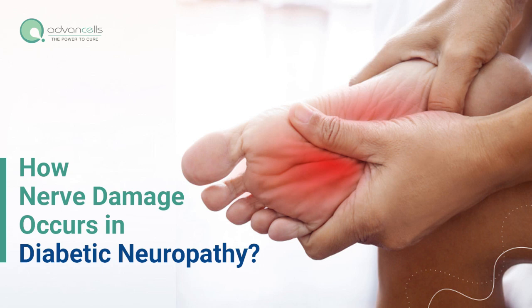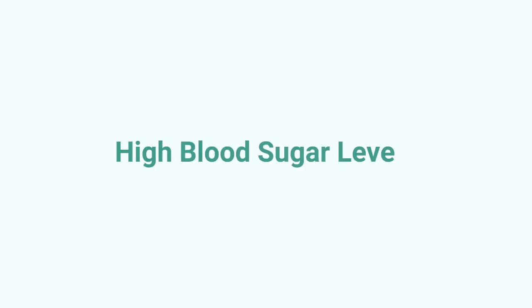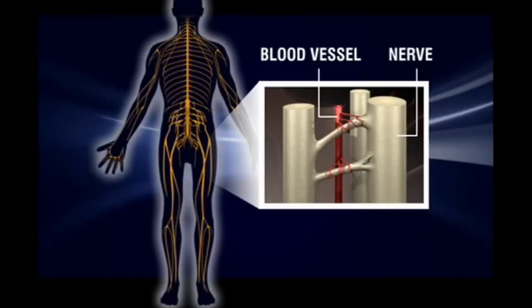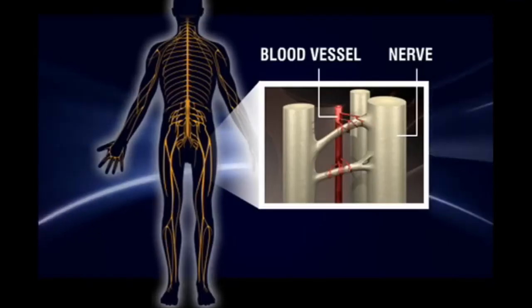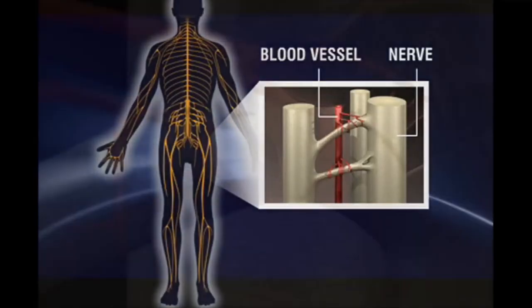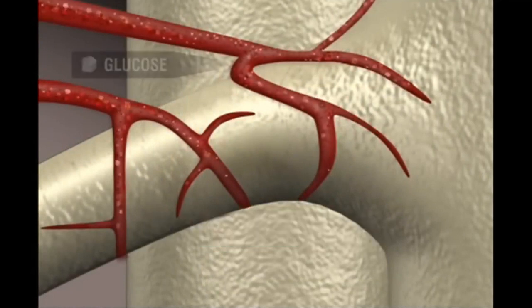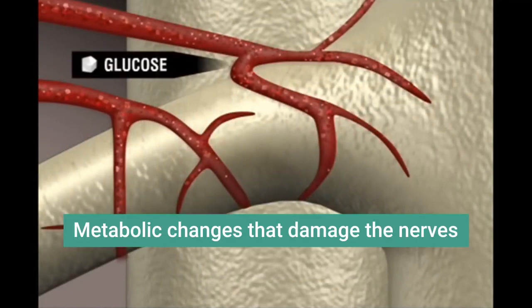How Nerve Damage Occurs in Diabetic Neuropathy. High Blood Sugar Levels: The primary cause of nerve damage in diabetic neuropathy is prolonged exposure to high blood sugar levels. Elevated glucose levels in the blood can lead to metabolic changes that damage the nerves over time.